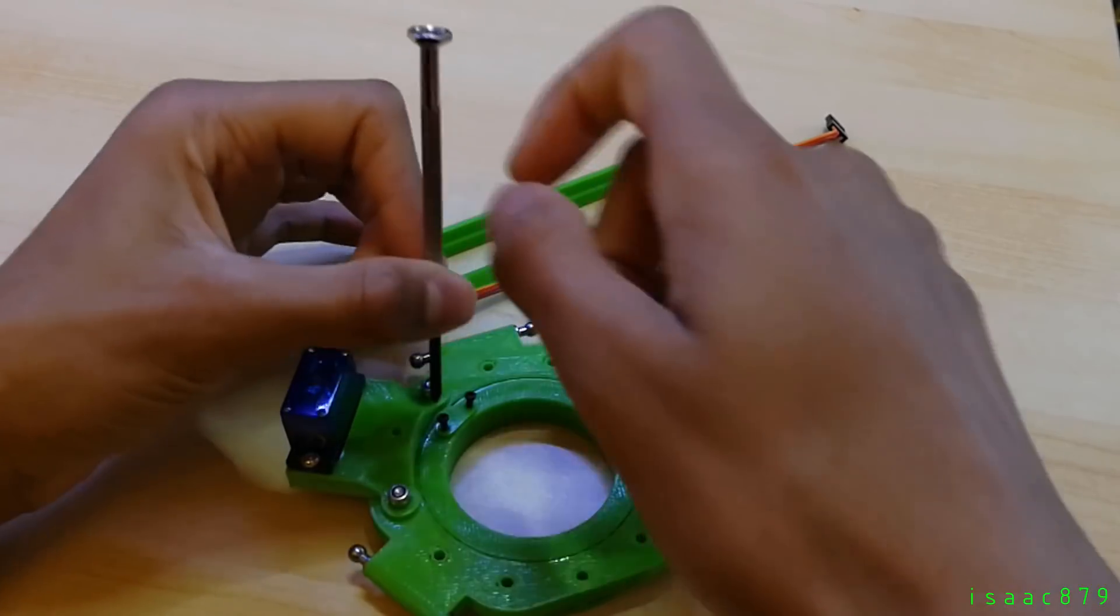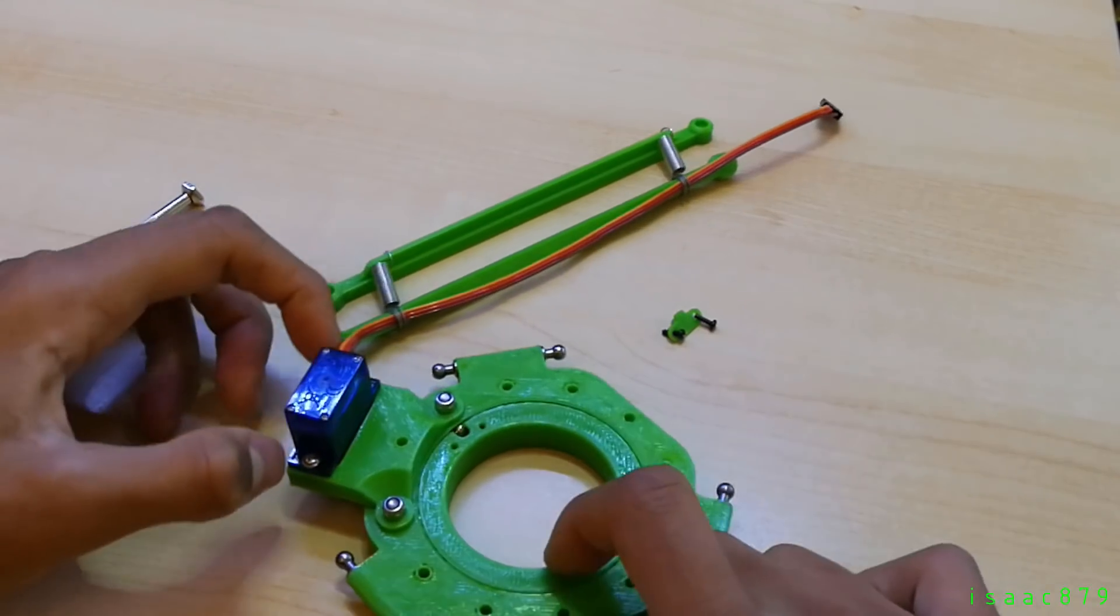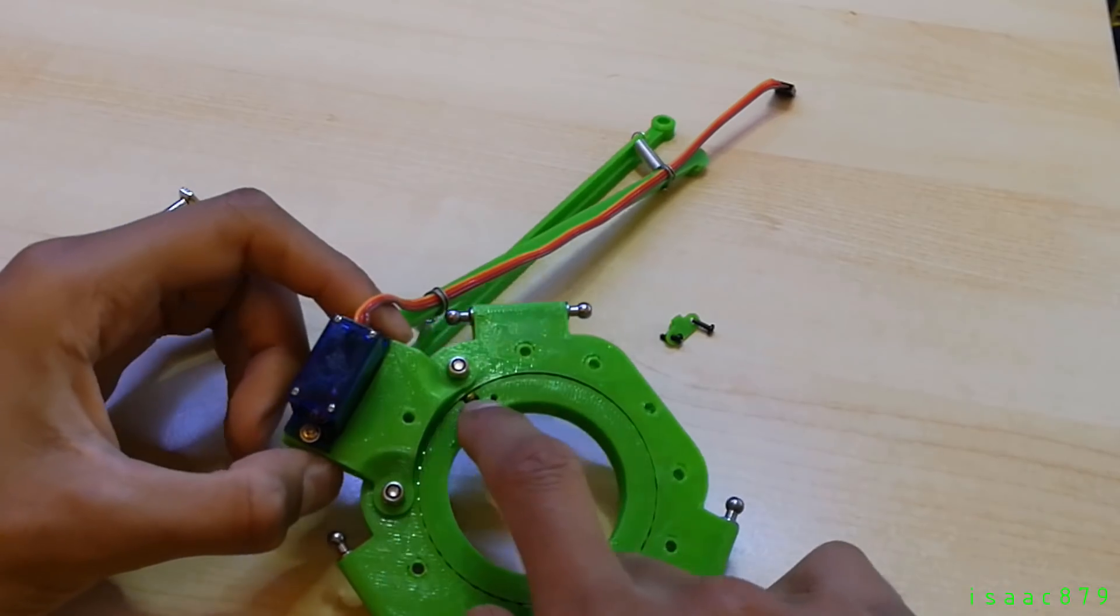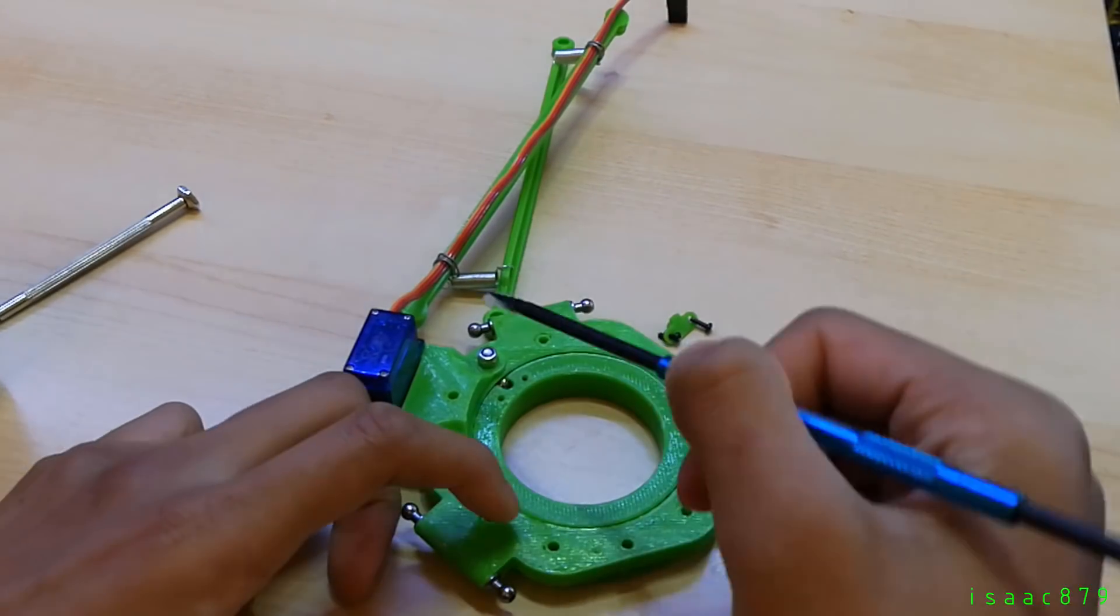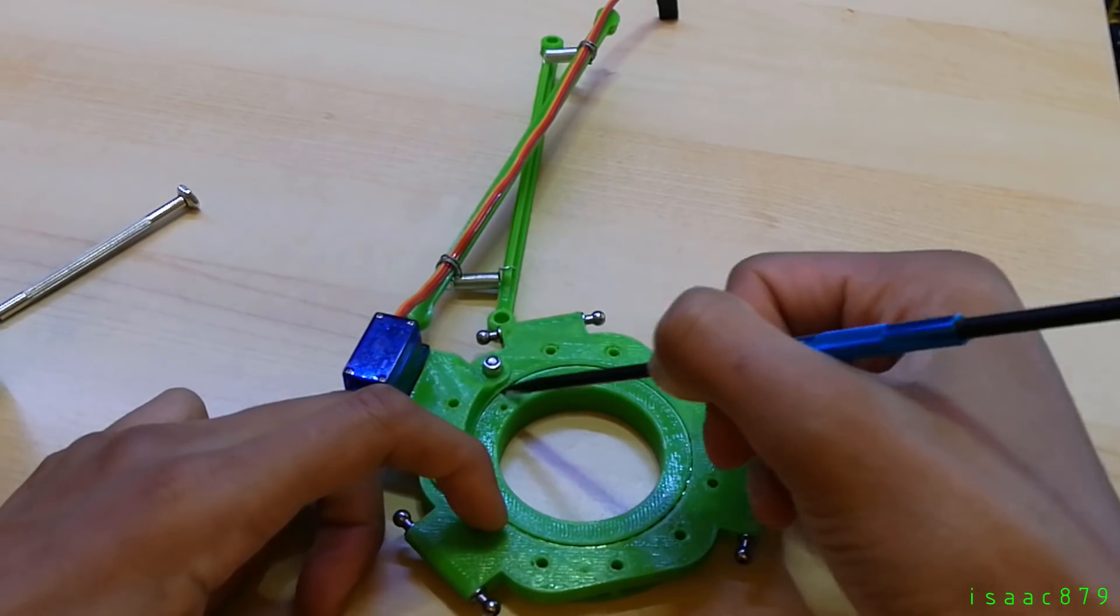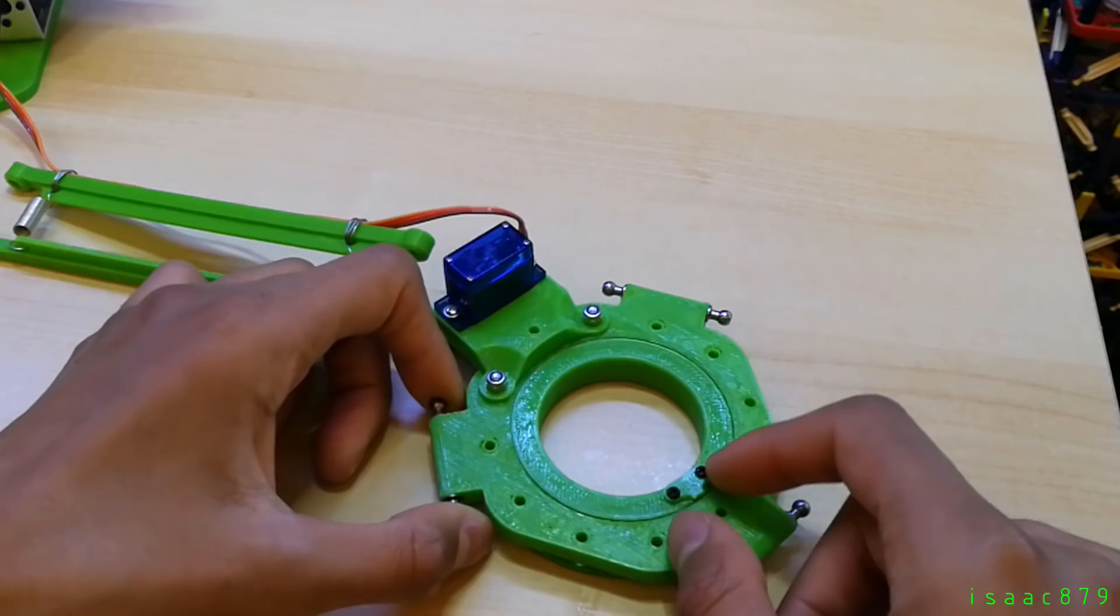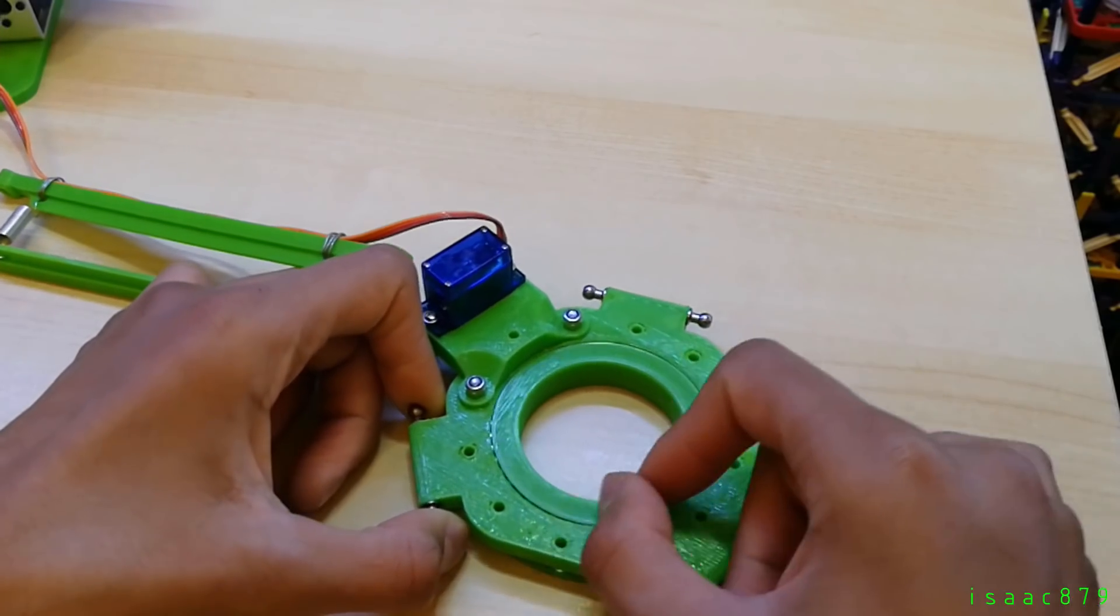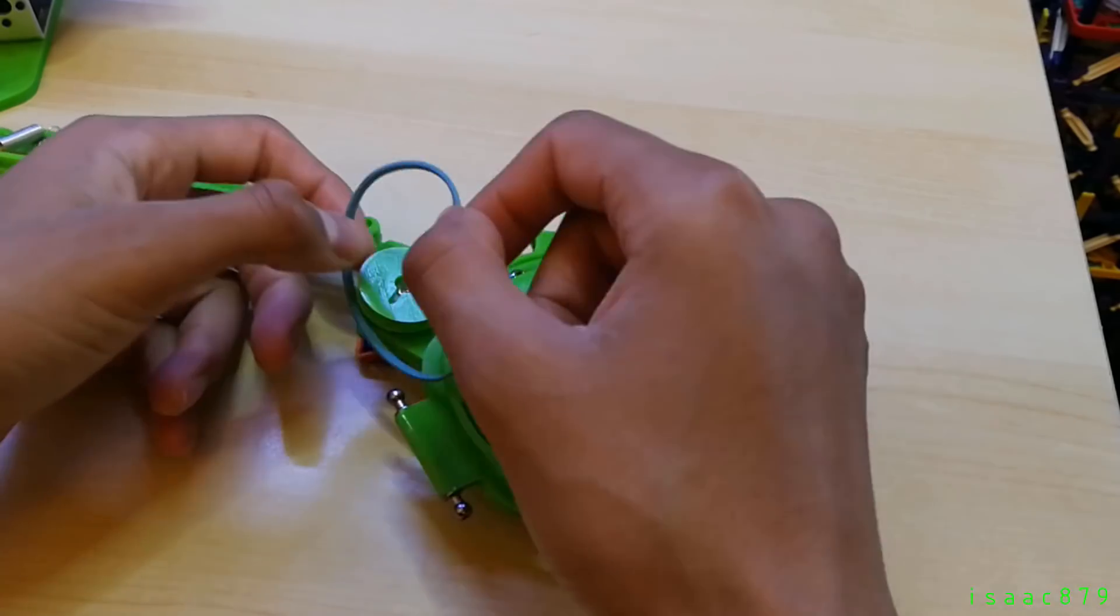I'm just removing the bearing cap so I can put lubricant in. I've got all the lubricant in there now and put the bearing cap back on. It feels like it's moving a lot smoother, so I'm going to put the elastic band back on and test out the servo.